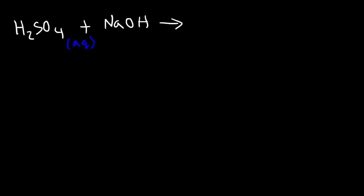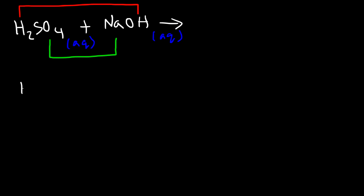Whenever you have an acid-base reaction, it's going to produce a salt and water. Now this is a double replacement reaction, so the first and the last ions will pair up together. The two in the middle — sodium and the sulfate ions — will pair up together. Whenever you pair up hydrogen with hydroxide, it will always produce H₂O, which is a liquid.